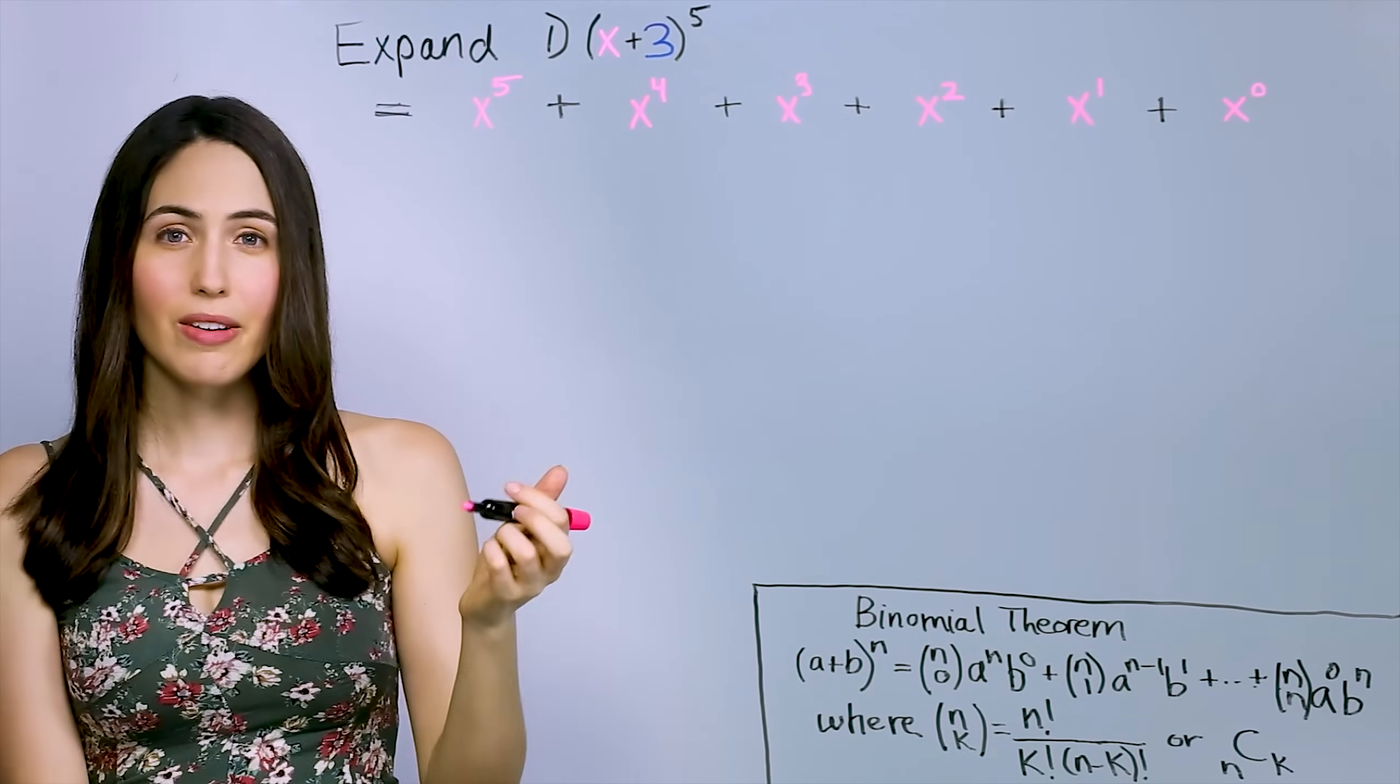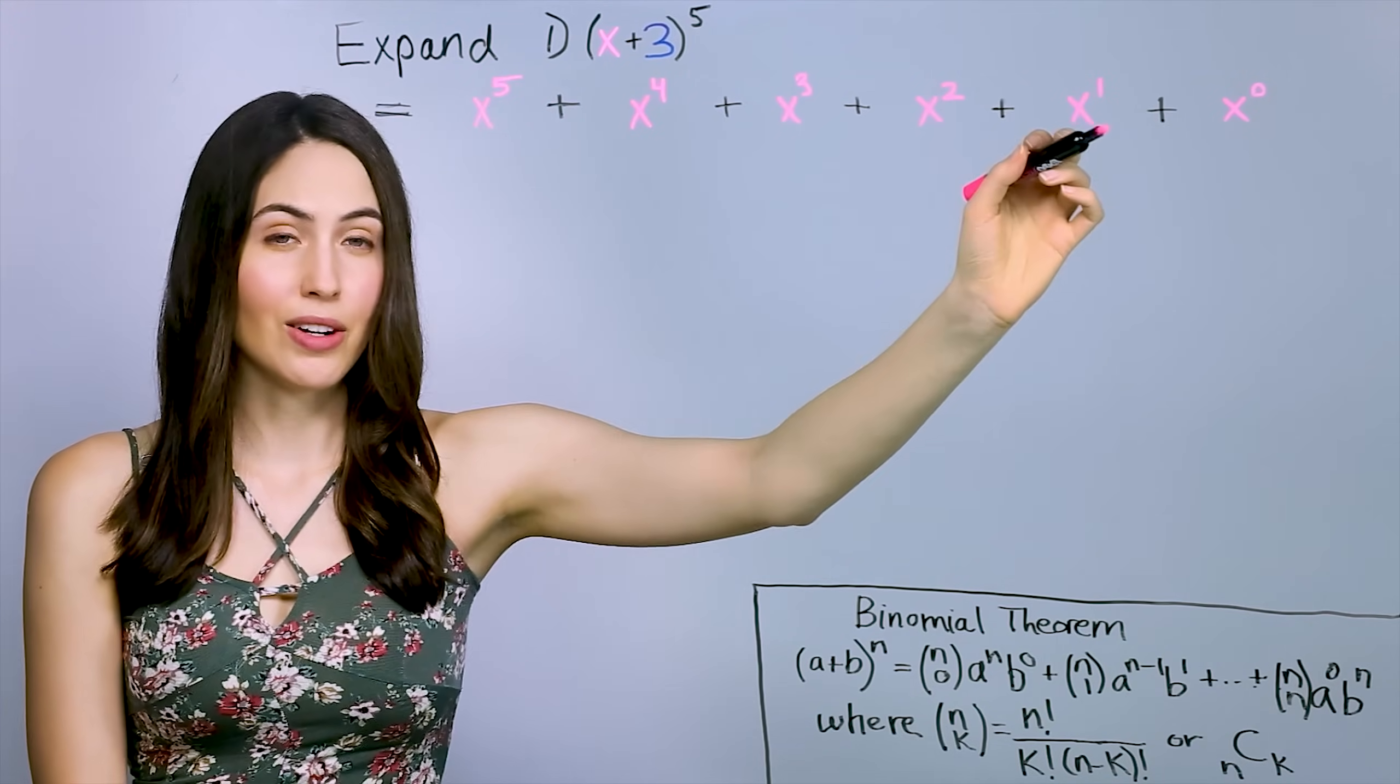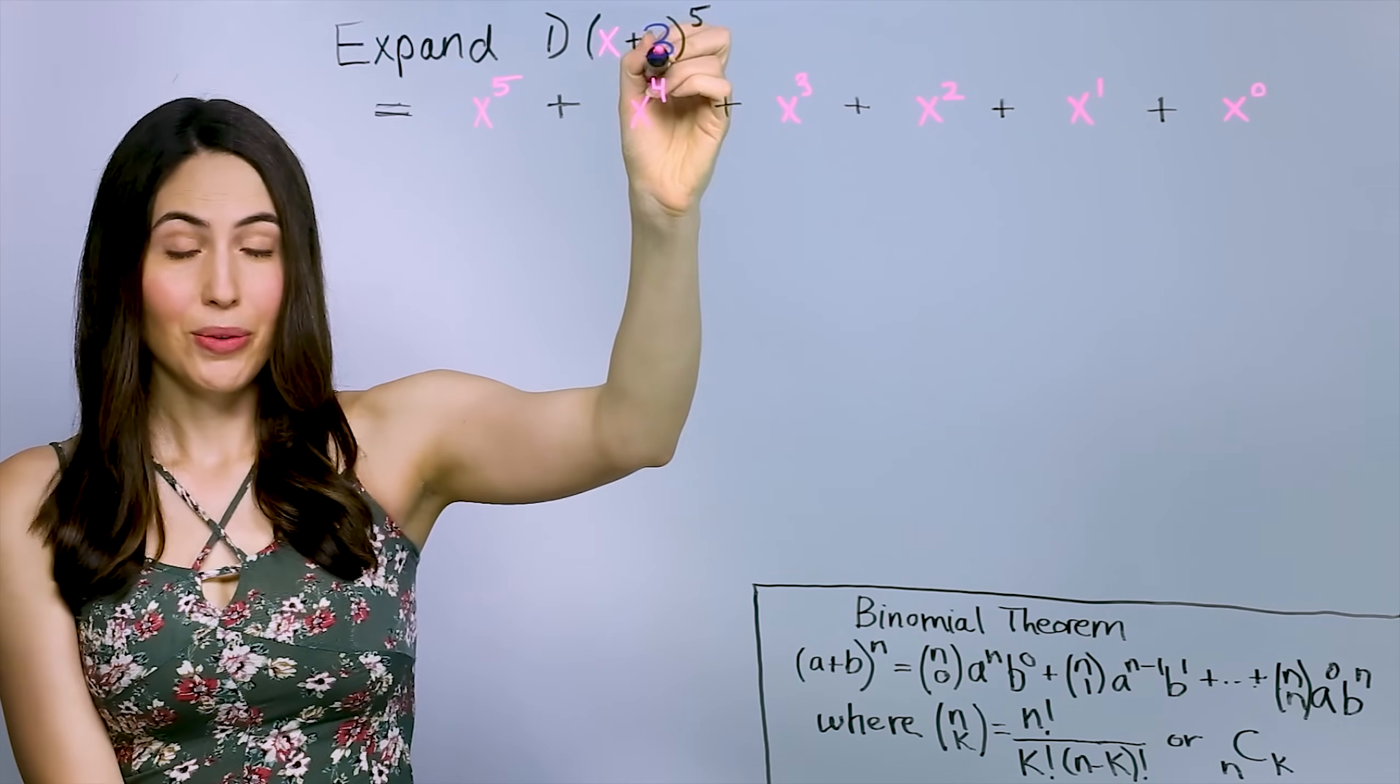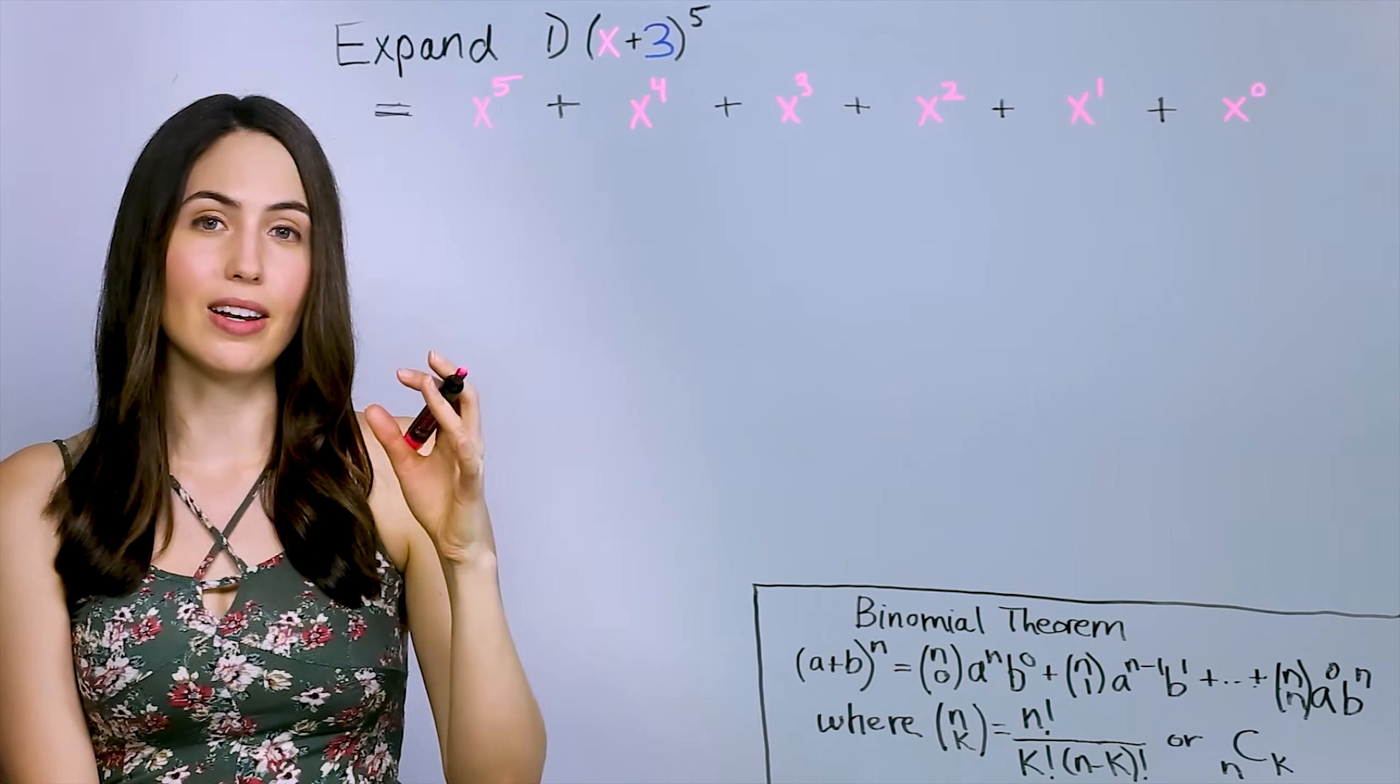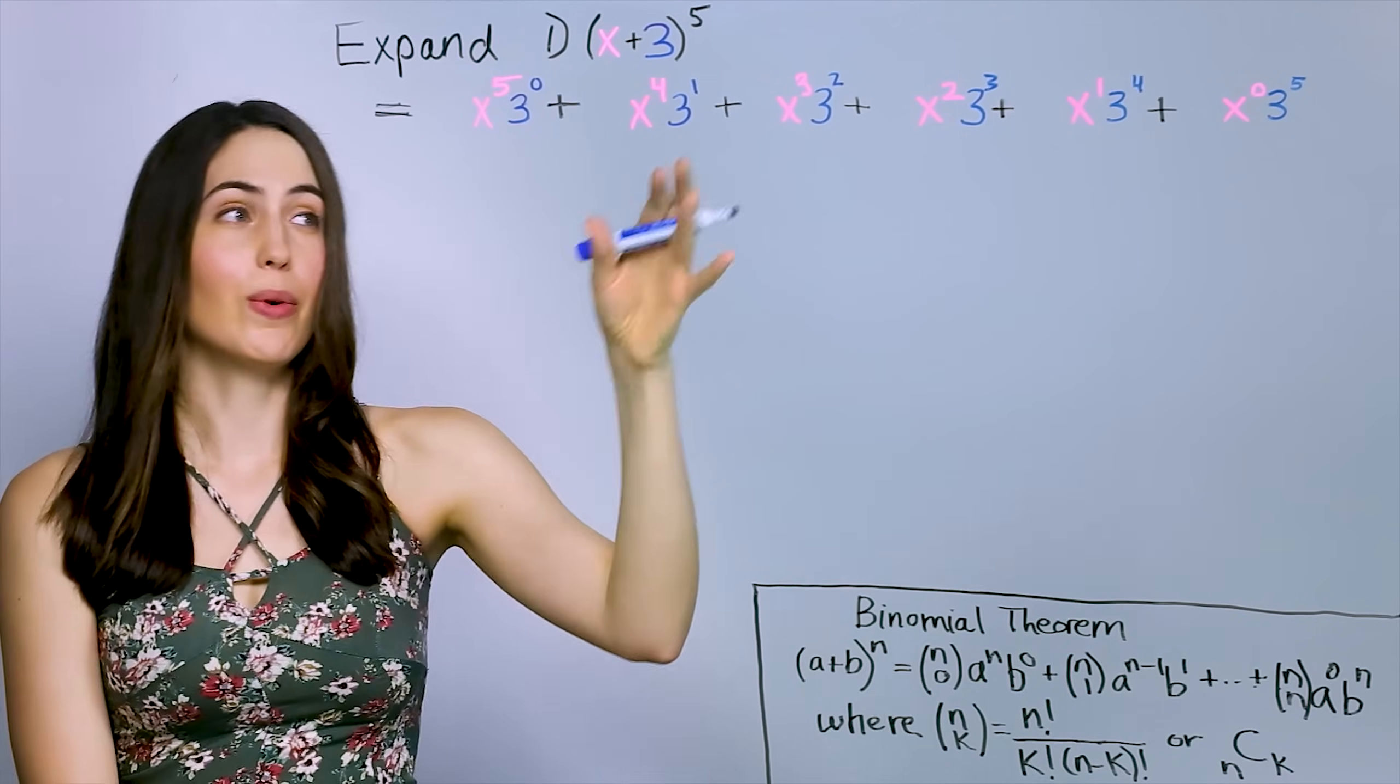Okay, so the powers of x, the first factor, start high at our power of 5, and then decrease by 1 in each term of the expansion, all the way down to 0. Not 1, but 0. Now, for the second term, our factor of 3 is going to start on the low end at power of 0, and then go up by 1. So you can see for that second factor of 3, it starts low and then increases by 1 in each term.